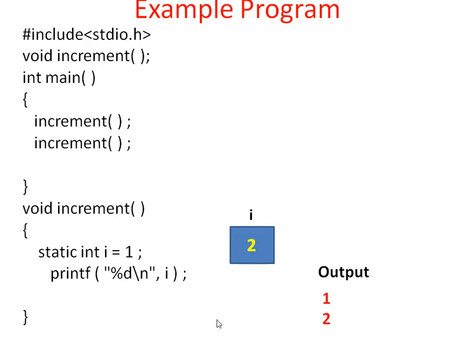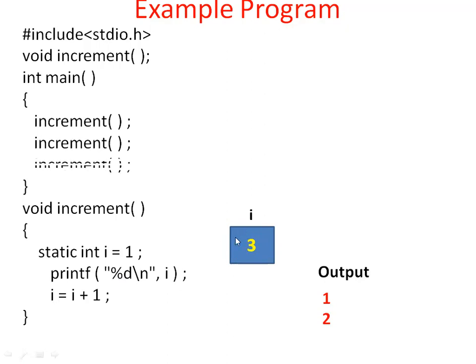You can see 2 printed. Then i = i + 1 is executed, i increments, i value becomes 3. Then end of the function is reached. Control leaves this function. Even when the control leaves, the variable remains available in memory. Control goes back to main function, then executes the third increment function call.